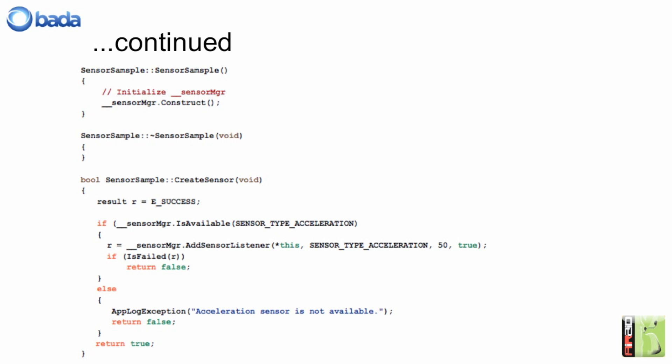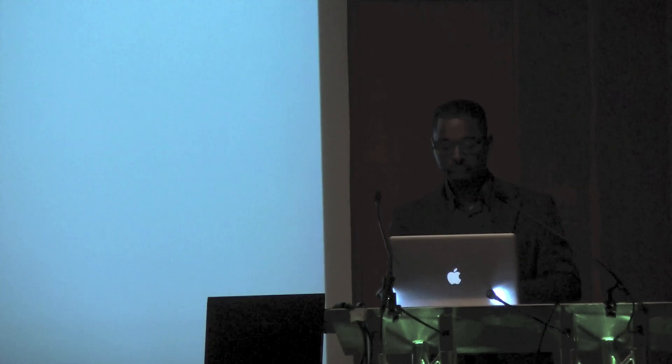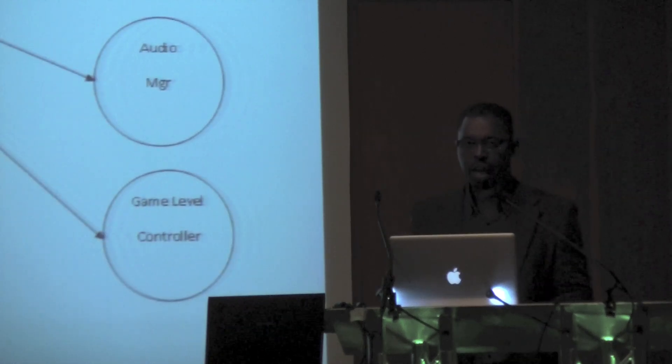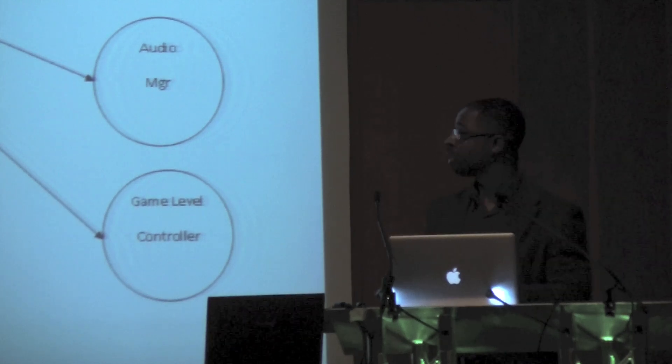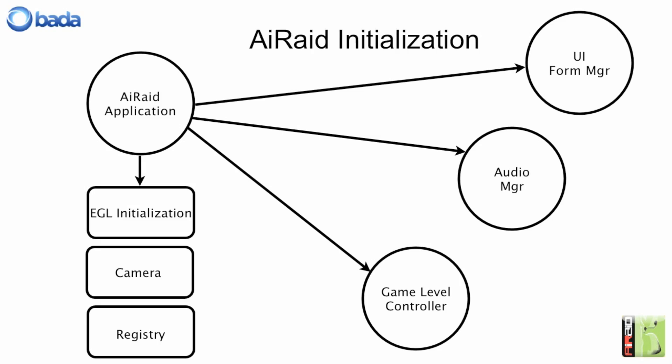Now we have our sensor manager constructed and we've added an acceleration sensor, which will report back every 50 milliseconds to the onDataReceived method. Let's look at the ARAID application — what's happening internally and how we perform initialization. Initialization within ARAID has internal and external components. Everything on the left is internal to the ARAID application. We do the necessary EGL initialization — that's the interface between the platform graphics and the OpenGL standard library — where we set up our native window and do the necessary binding, which I have code extracts of to follow.